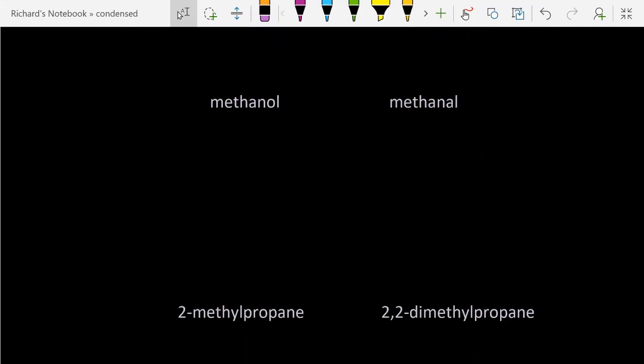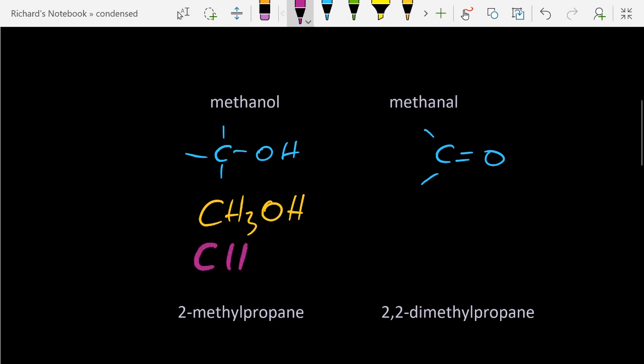Methanol versus methanal. So methanol is quite straightforward: CH3OH. Now you might be tempted but you'd be wrong to write CH4O, because that is unclear that this is an alcohol. It's unclear - you need to have the functional group clearly identified. So that would be wrong. Don't do it.